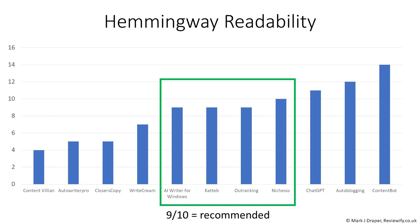There was a good performance from AI Writer, Kateb, Outranking, and Niches. It's worth noting that at the time of making this video, Kateb and Niches are still on lifetime offer via AppSumo.